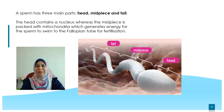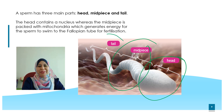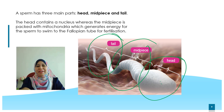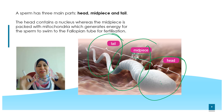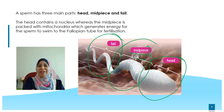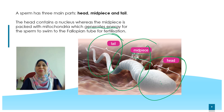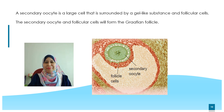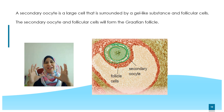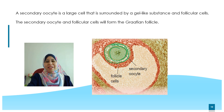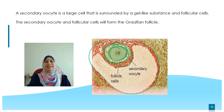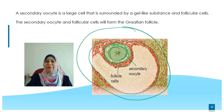Now we look at the structure of a sperm. The sperm has three main parts: the head, the midpiece, and the tail. The head contains the nucleus. The midpiece is packed with many mitochondria, which generate energy for the sperm to swim in the fallopian tube to help in fertilization. Looking at the structure of the graafian follicle: inside, shown in green, is the secondary oocyte — a large cell — surrounded by a gel-like structure in orange, called the follicle cell. Together, the secondary oocyte and follicle cells form the graafian follicle.